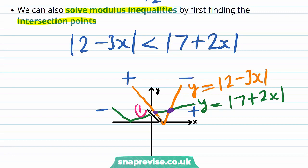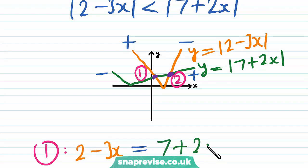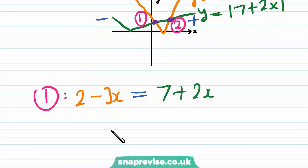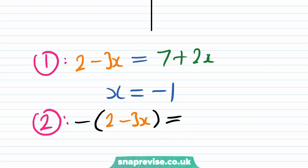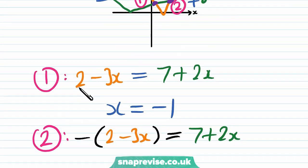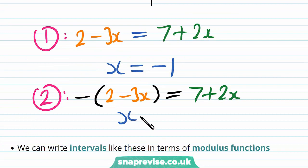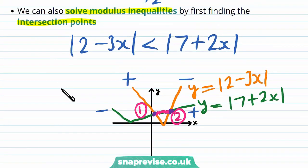If we label the two points 1 and 2, to find the first one we need to solve the equation 2 minus 3x equals 7 plus 2x, because this intersection point lies on the positive branch of both modulus functions. When we solve this equation, we get x equals minus 1. For the second intersection point, this must occur when the minus of 2 minus 3x equals the positive version of 7 plus 2x, because it occurs on the positive branch of the modulus of 7 plus 2x but the negative branch of the modulus of 2 minus 3x. When we solve this equation, we get x equals 9. The inequality will be minus 1 less than x less than 9, and it's a strict inequality because the original inequality was also strict.